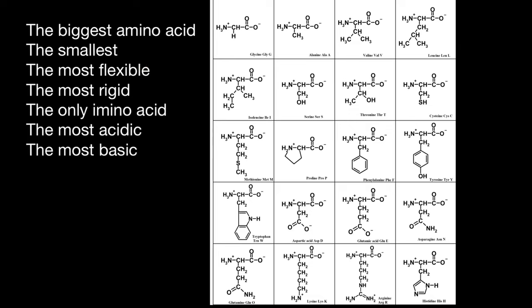The most rigid amino acid is going to be proline. As you see, this is the only amino acid whose R group makes a cycle on itself. All the rest of the amino acids have free rotation — they can rotate around the amino group, around the carboxylic group, and around the R group. But proline has only one freedom of rotation, around the carboxylic group. We usually find this amino acid when a polypeptide chain makes abrupt turns.